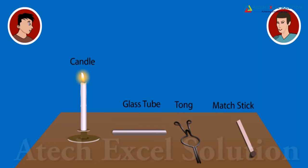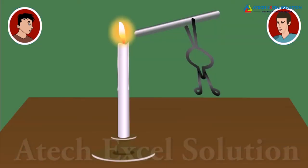Let us do an activity. For this, we will require a burning candle, a glass tube, a pair of tongs, and a matchstick. Hold a glass tube with a pair of tongs and introduce its one end in the dark zone of the candle flame. Now bring a matchstick near the other end of the glass tube. What do you see? The matchstick catches fire — it has got a flame. The vapor of the molten wax causes the matchstick to get lighted.